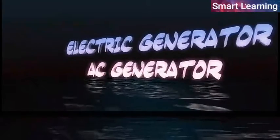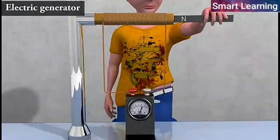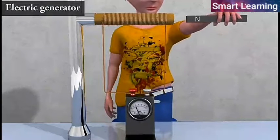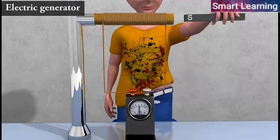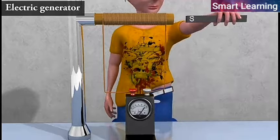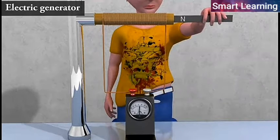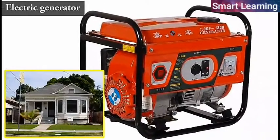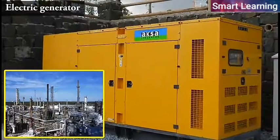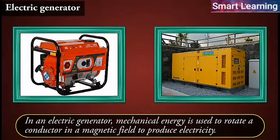Electric generator, AC generator. Based on the phenomenon of electromagnetic induction, the experiments studied above generate induced current, which is usually very small. This principle is also employed to produce large currents for use in homes and industry. In an electric generator, mechanical energy is used to rotate a conductor in a magnetic field to produce electricity.